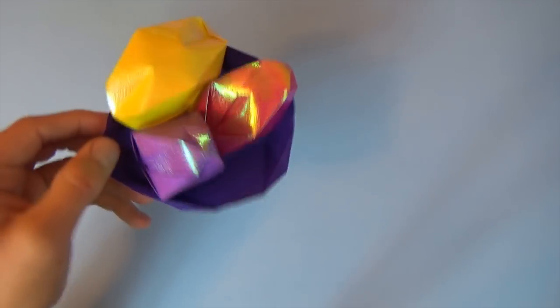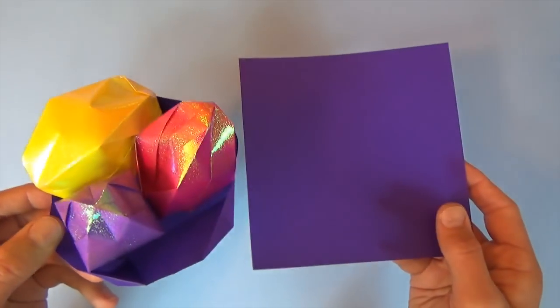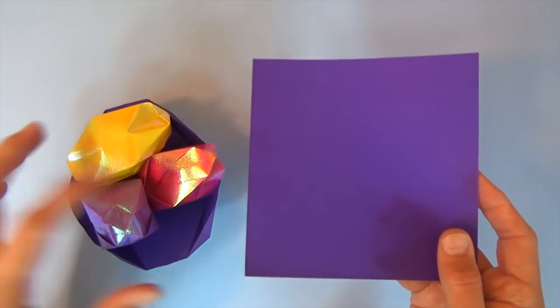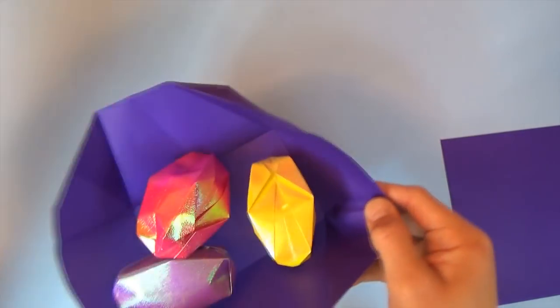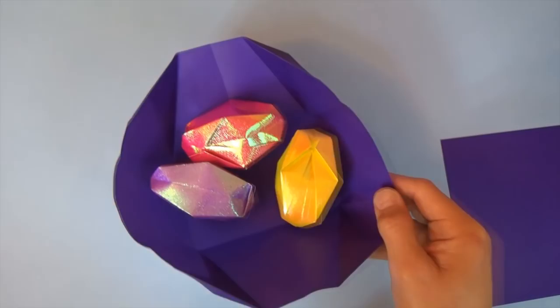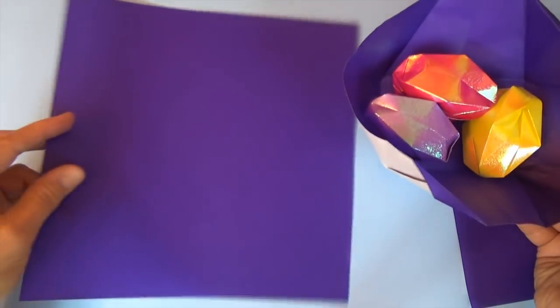Alright, so for a small Easter basket like this, you can use a 6 inch square, which is the same size that I folded these eggs from. But if you'd like a larger Easter basket, like this one, then you should fold using a 10 inch square.